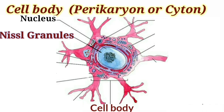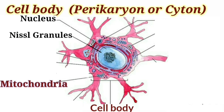Nissl granules surround the nucleus. Their basic function is to conduct the nerve impulse, and a second very important function is that they act as a catalyst agent, which increases the metabolic activity of the cell. The next structure is mitochondria, which is located outside the nucleus, near the endoplasmic reticulum, and there are a number of mitochondria present.